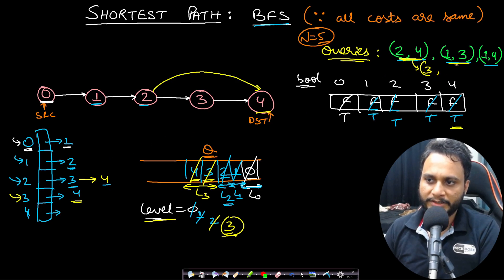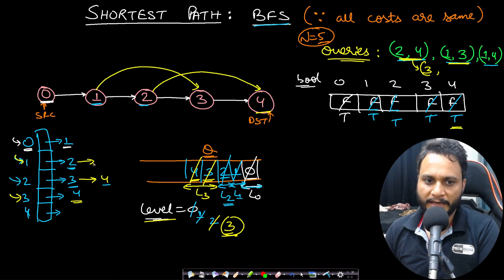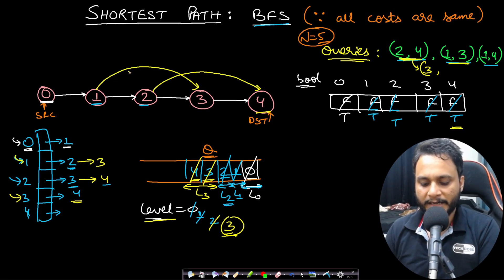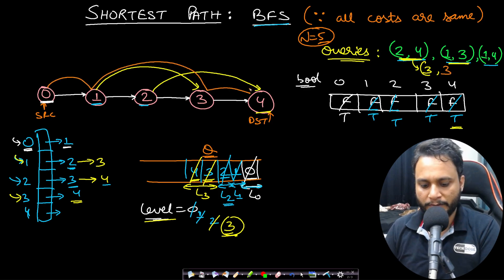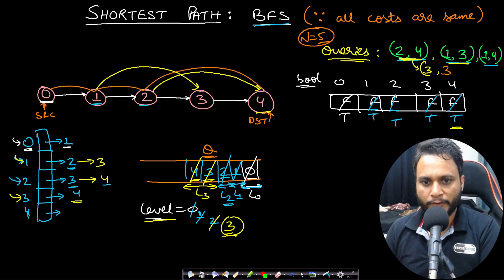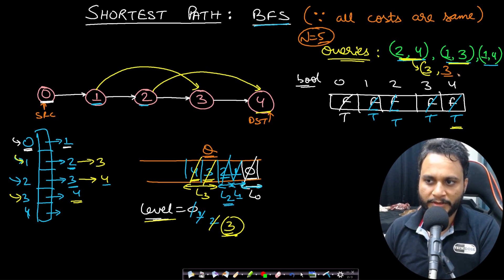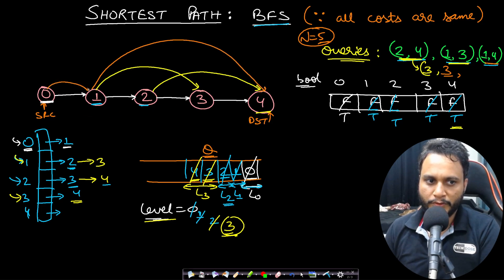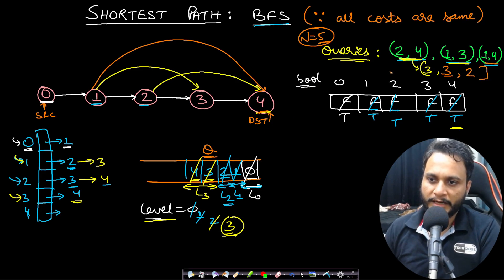For the next query [1,3]: add 3 to adjacency list of node 1, then repeat BFS. Whether you go 0→1→3→4 or 0→1→2→4, it's still 3 hops, so the answer remains 3. For query [1,4]: add 4 to adjacency list of node 1. Now you can reach 4 in 2 steps: 0→1→4. Repeating BFS pops 4 at level count 2, so 2 is appended. Final result: [3, 3, 2].